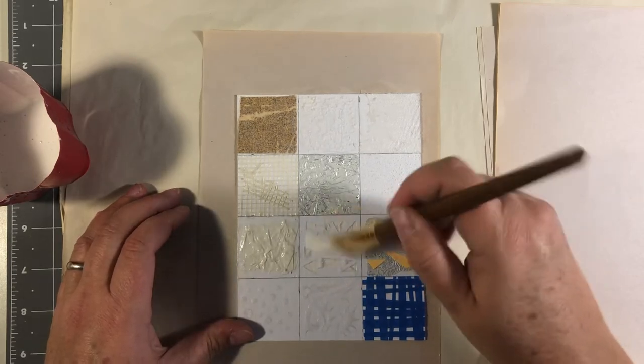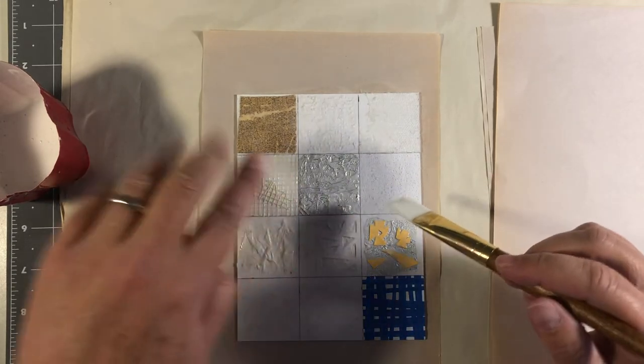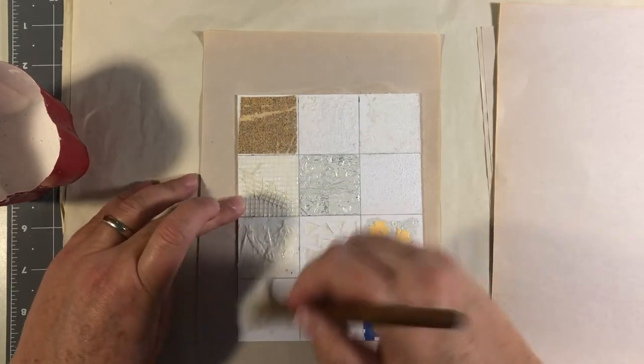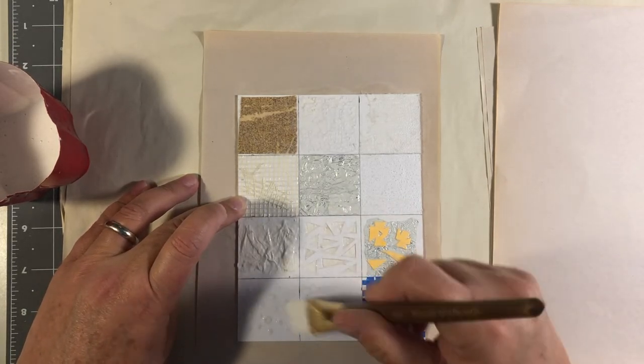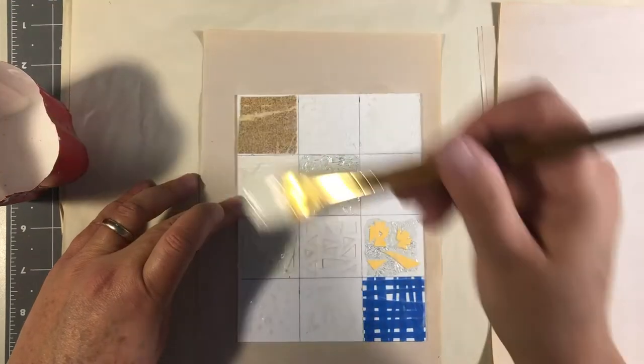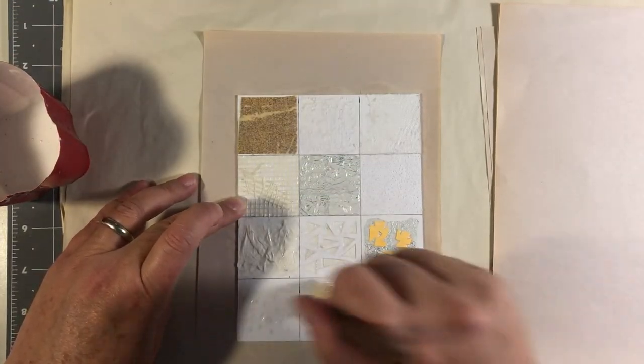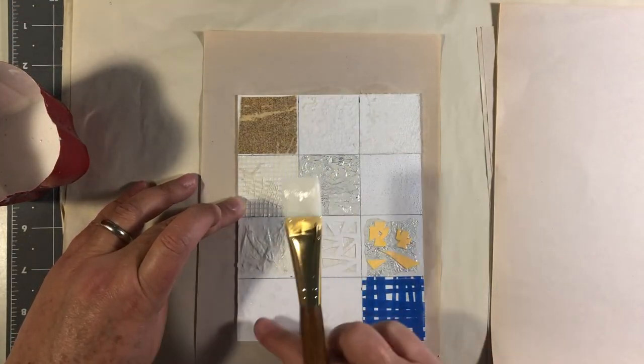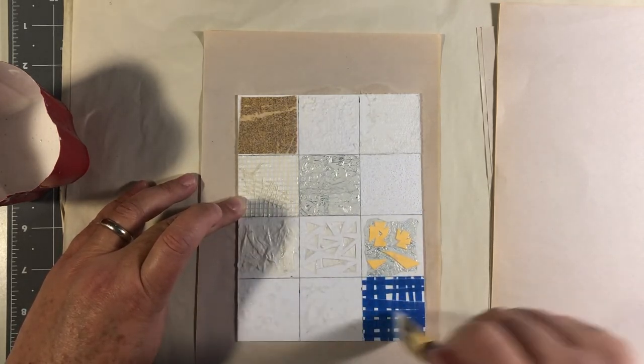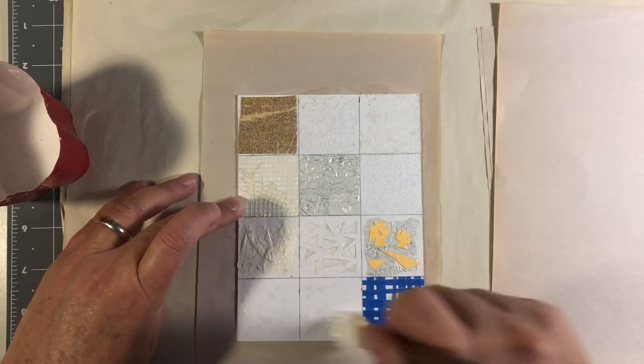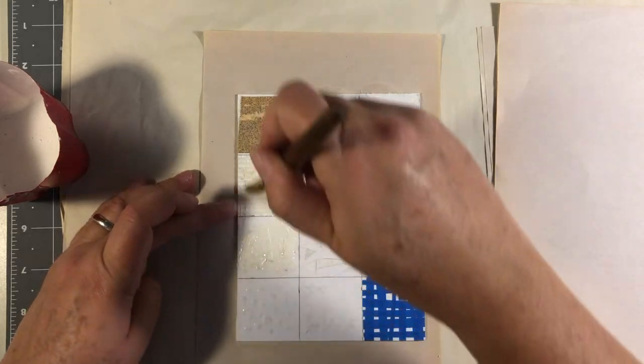Be really mindful of areas that are recessed and underneath the surface. It's very easy to overlook those. Make sure things like glue, which is on these areas here, are completely dry because when you run a brush over them, they will go away if they are not dry.